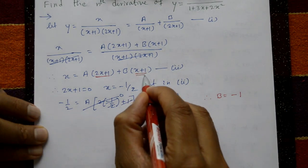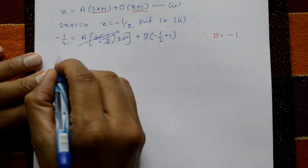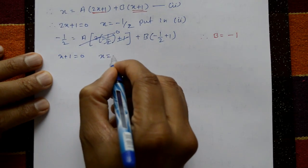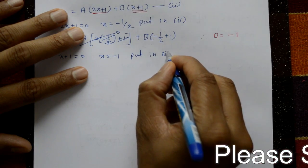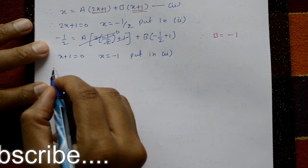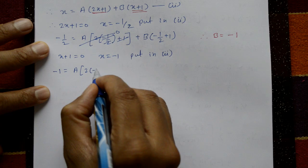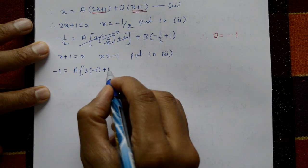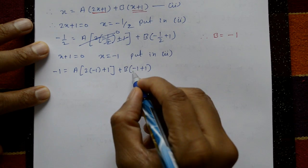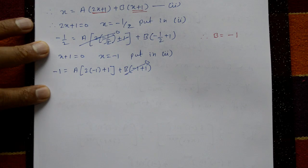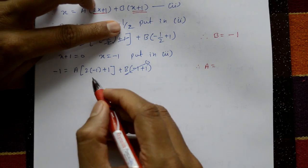Take x+1 = 0, so x = -1. Put x = -1 in equation number 2: -1 = A(2(-1)+1) + B(-1+1). The B term is 0. Therefore A = 1.